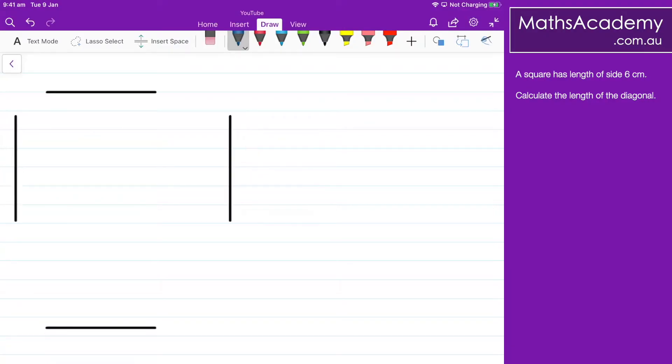So here I have the square. I know that the length of the sides are 6 centimeters so I can put those in and I'm trying to calculate the length of this diagonal.